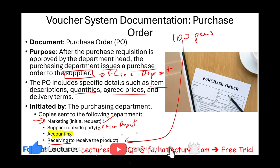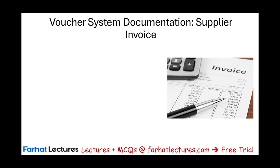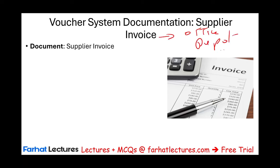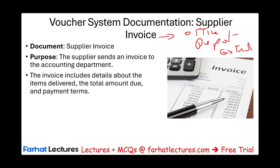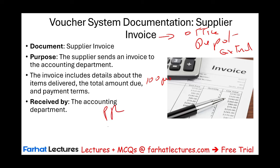Once Office Depot receives the order, they ship it and send an invoice. We might receive the invoice before the shipment or with it — it doesn't matter. This supplier invoice comes from Office Depot as an external party and is sent to the accounting department, which now has the purchase requisition, purchase order, and invoice.